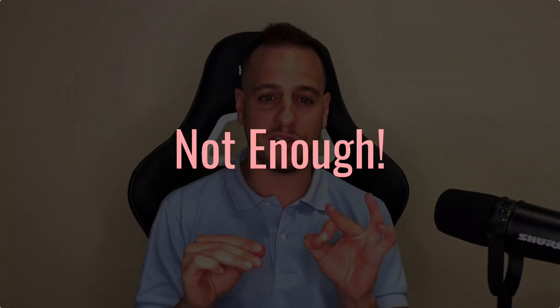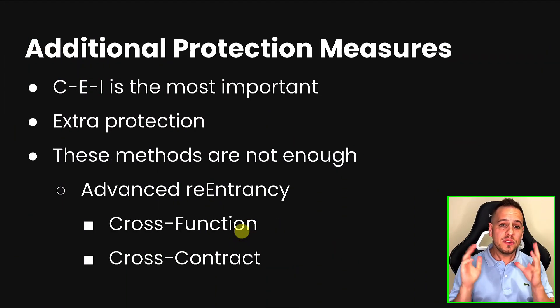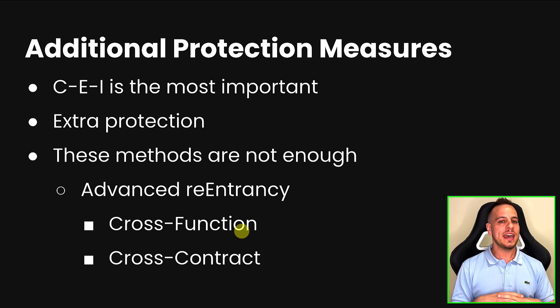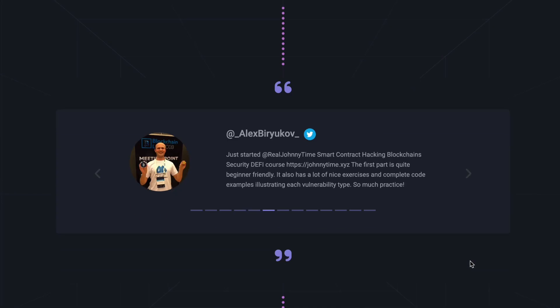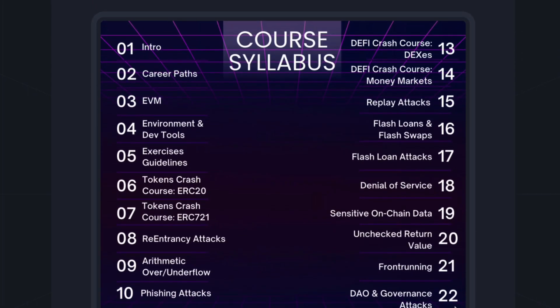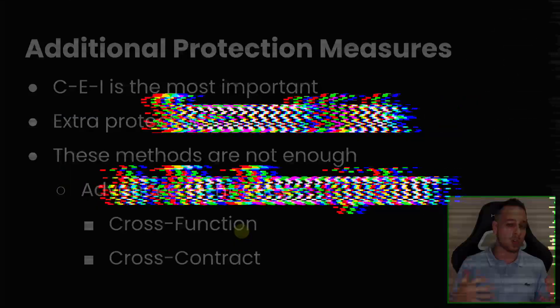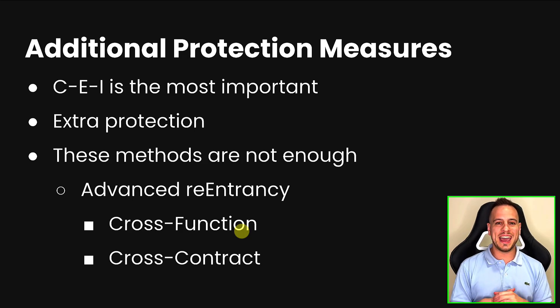The additional methods I'm about to present are not enough on their own, because some other forms of re-entrancy — like cross-function, cross-contract, or read-only re-entrancy — can bypass them. If you want to learn more in-depth about smart contract hacking and all forms of re-entrancy attacks, check out my complete practical smart contract hacking course and join the blockchain security academy community. These methods help prevent re-entrancy, but you should always follow the Checks-Effects-Interactions pattern.